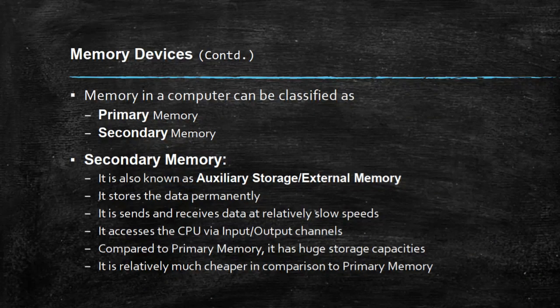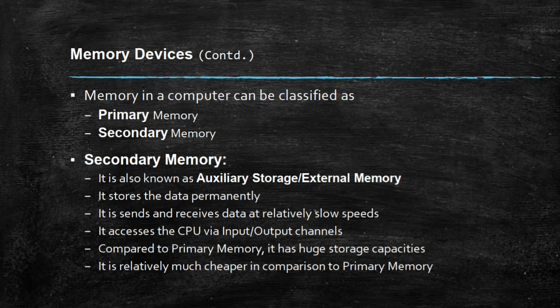Secondary memory, also known as auxiliary or external memory, stores data permanently. It sends and receives data at relatively low speeds and accesses the CPU via input and output channels. Compared to primary memory, secondary memory has huge storage capacity and is relatively much cheaper.